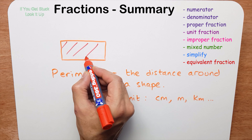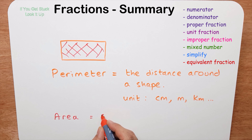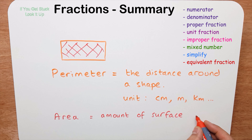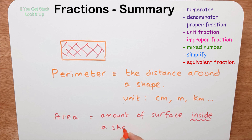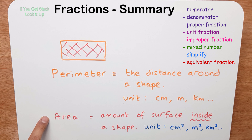Now let's look at area. Area is the amount of surface inside a shape. We measure area in centimeters squared, meters squared, or kilometers squared — square units. Students always mix these two up, so take some time to learn the difference between perimeter and area — it makes a lot of difference to your maths. Thank you for watching, don't forget to like, subscribe, and share.